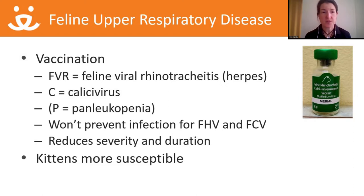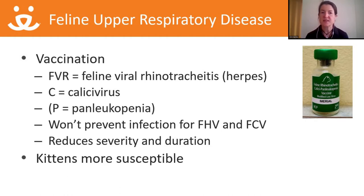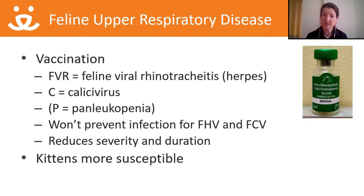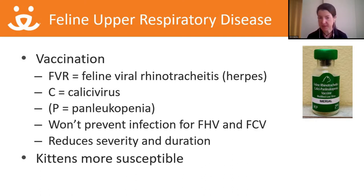For the two most important pathogens — calicivirus and herpes — these are bugs we vaccinate for. Our standard FVRCP vaccine: FVR stands for feline viral rhinotracheitis, which is herpes; the C is for calicivirus. Even with vaccination, we don't completely prevent 100% infection. Once vaccines have taken effect, they reduce the severity of clinical signs and potentially the duration of shedding. Unlike panleukopenia, where vaccination is essentially 100% protective, that's not the case with calicivirus and herpes — cats can still get infected and spread these diseases.